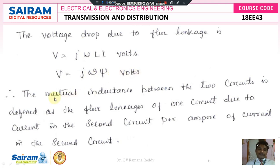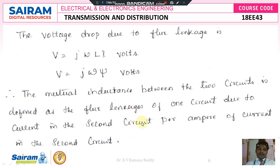The mutual inductance between two circuits is defined as the flux linkage that takes place from one circuit to another circuit per ampere of current in the second circuit. The current in the second circuit is because of the current flowing in the first circuit producing flux, and that flux links to the secondary coil. Therefore ψ is equal to N1 into I, that is the number of turns of the primary coil N1 into the current in the primary coil I.